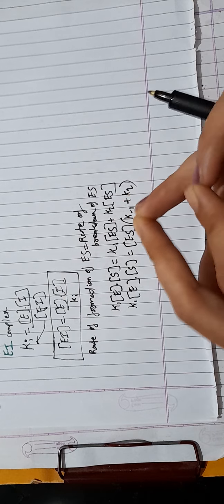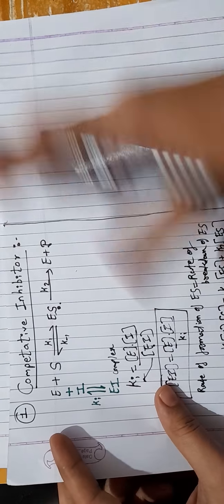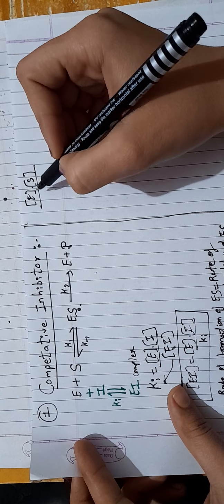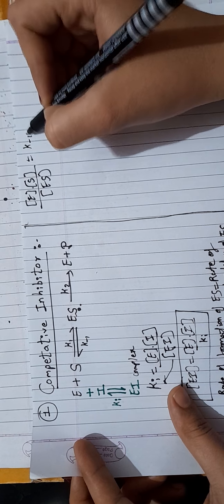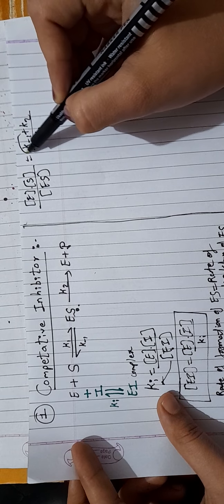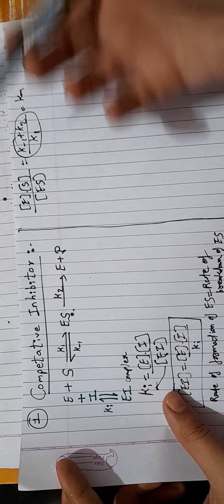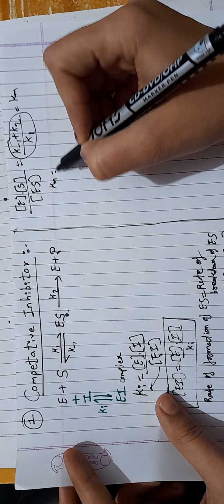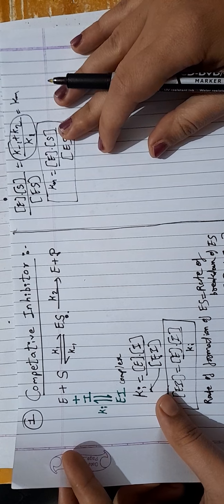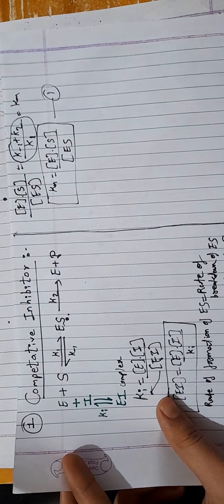This gives us Km equals concentration of E times concentration of S divided by concentration of ES. This is the same result as the Briggs-Haldane equation, and we label this as Equation 1.